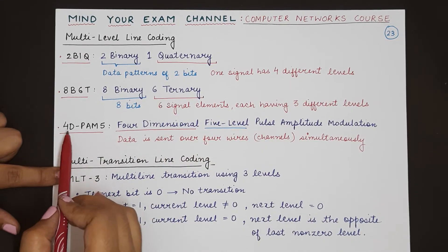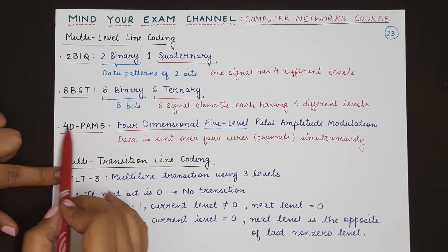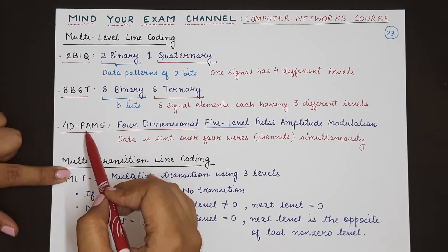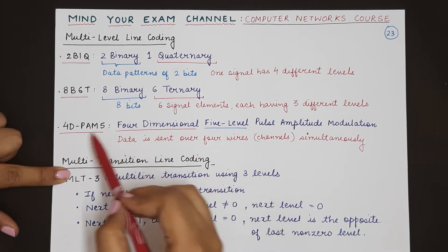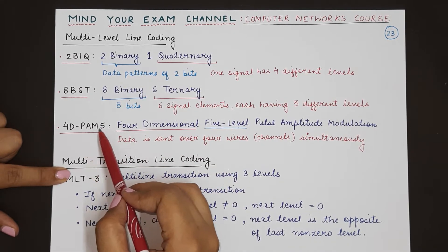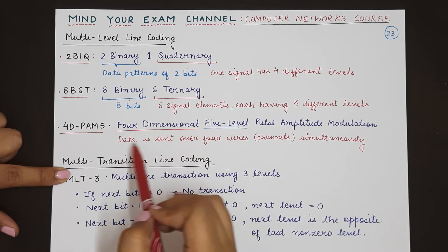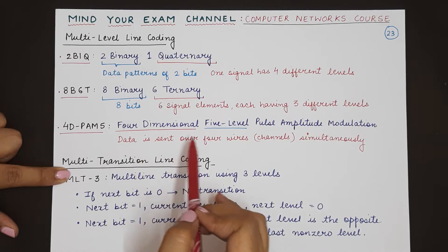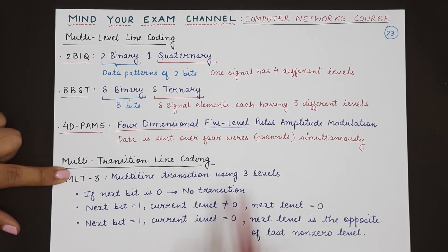The next type is 4D PAM5. The full form is 4 dimensional 5 level—this 5 stands for 5 level pulse amplitude modulation. 4 dimensional means that the data will be sent over 4 channels or 4 physical wires simultaneously.